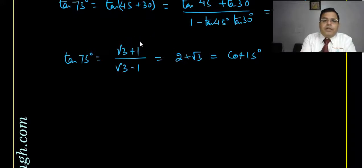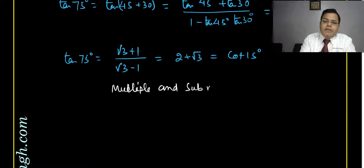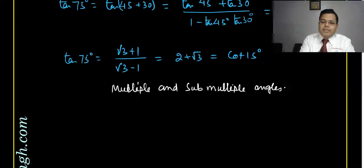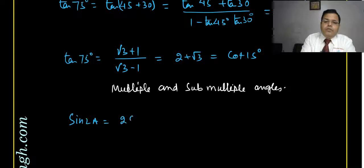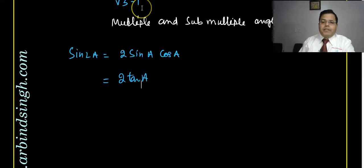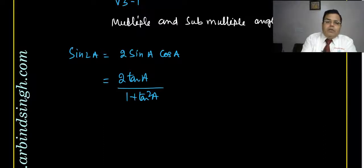Now, some multiple and submultiple angle formulas are also needed. Multiple angle means if the angle is A, then 2A, 3A, 4A are multiples. A/2 is called a submultiple. The formula for sine of a double angle: sin 2A equals 2 sin A cos A. This can also be written as 2 tan A upon (1 plus tan squared A).